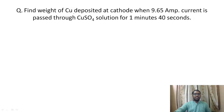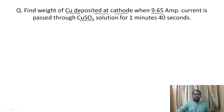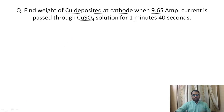In this second question we have to find the weight of copper deposited at the cathode when 9.65 amperes of current is passed through copper sulfate solution for one minute and 40 seconds. To solve this kind of question we use the charge on one mole of electrons.